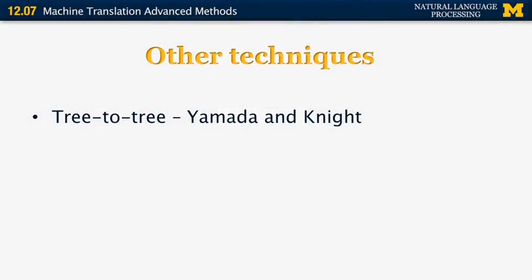I'm going to now continue with some very brief introduction to some of the advanced methods that are used in statistical machine translation beyond the IBM models. They include things like tree-to-tree translation, that's, for example, work by Yamada and Knight.